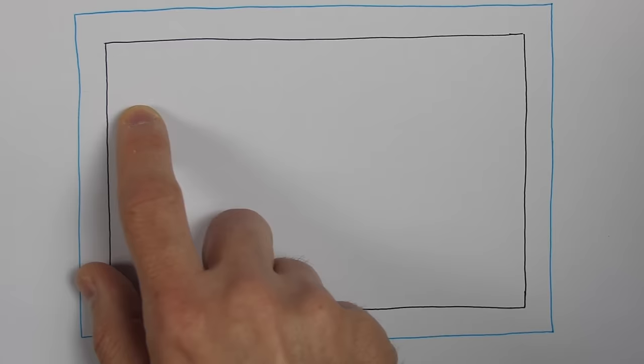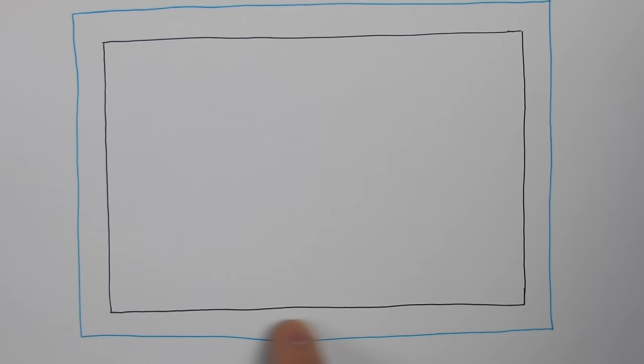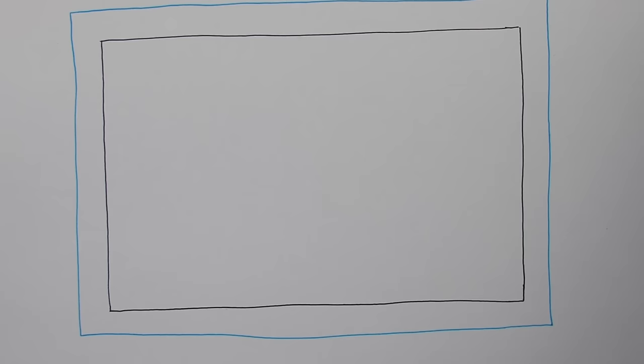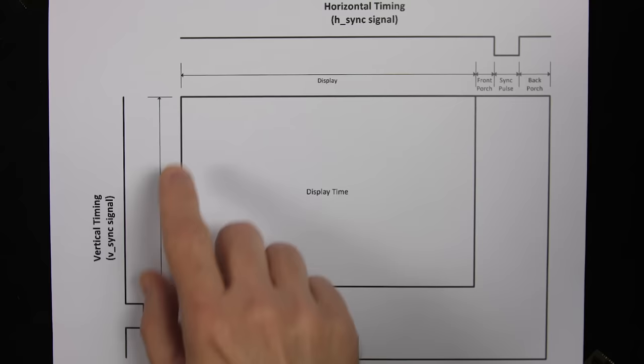Before it paints the next scan line, it blanks and has a little extra room on the right before the beam swings back to the left — which also takes time. Then the same thing happens at the bottom: there are some blank scan lines before the beam gets sent back up to the top left for the next frame. So even though a modern monitor doesn't use the same physical process, we've got to follow the same timing in order to get an image to show up.